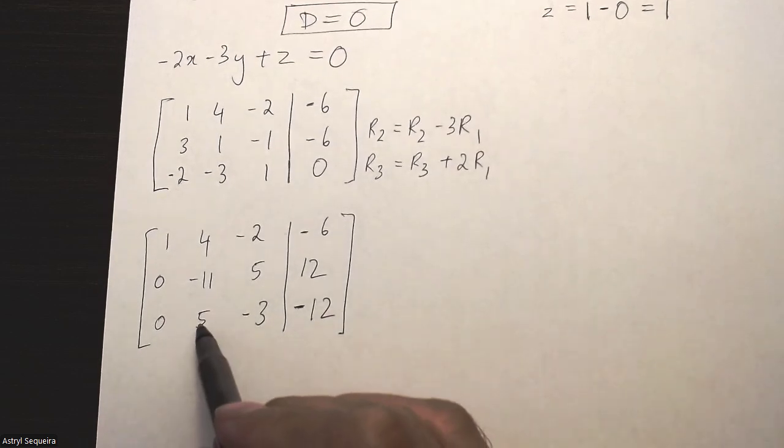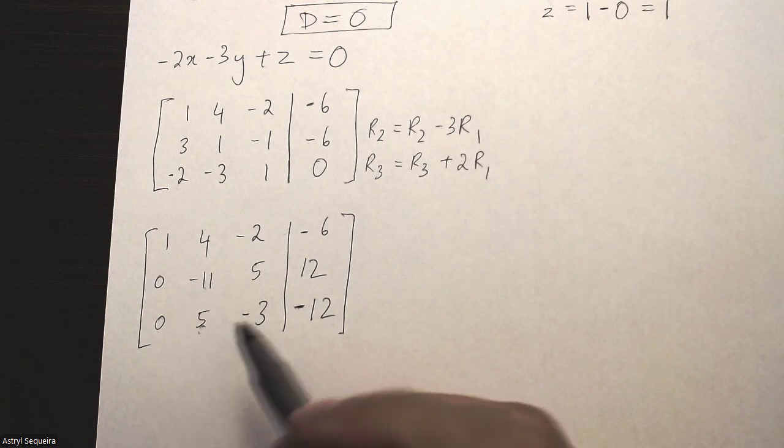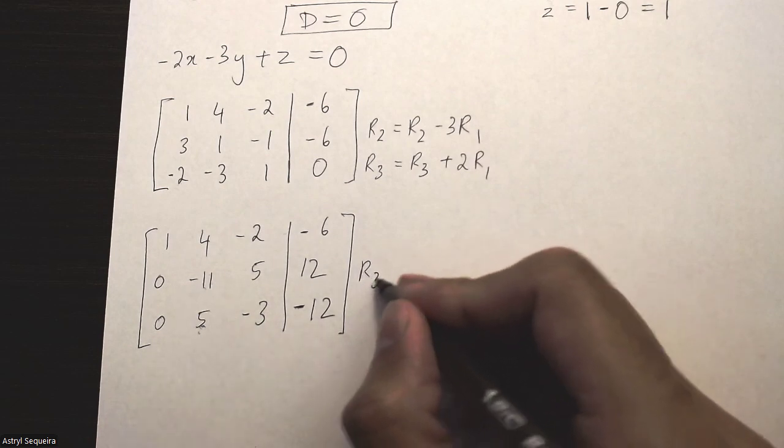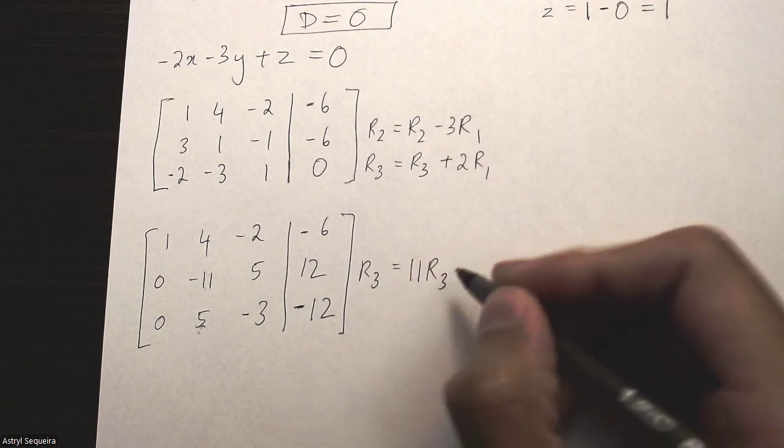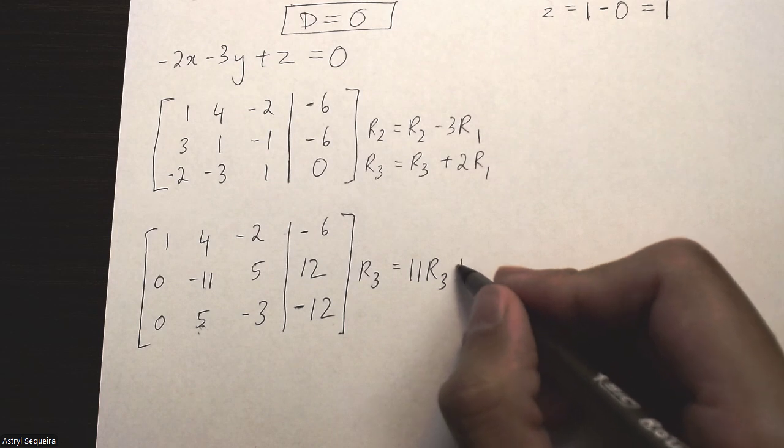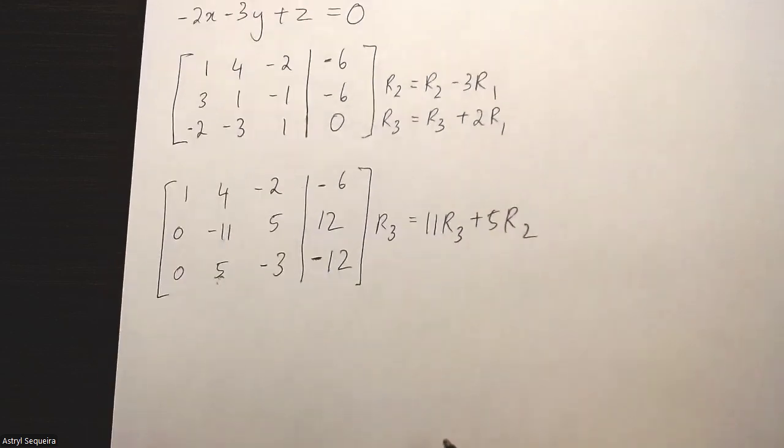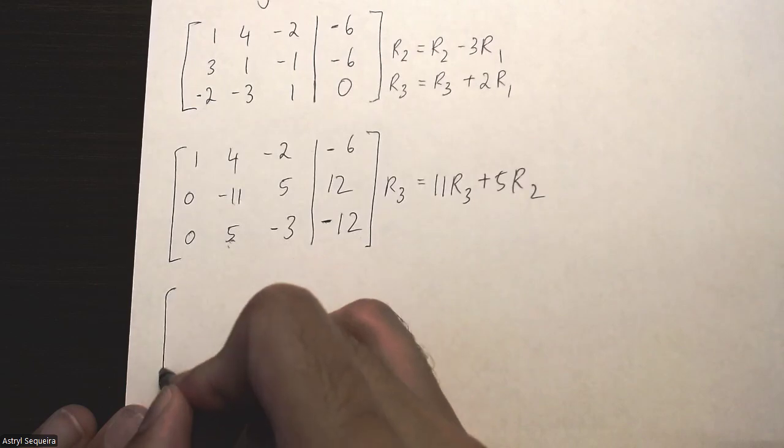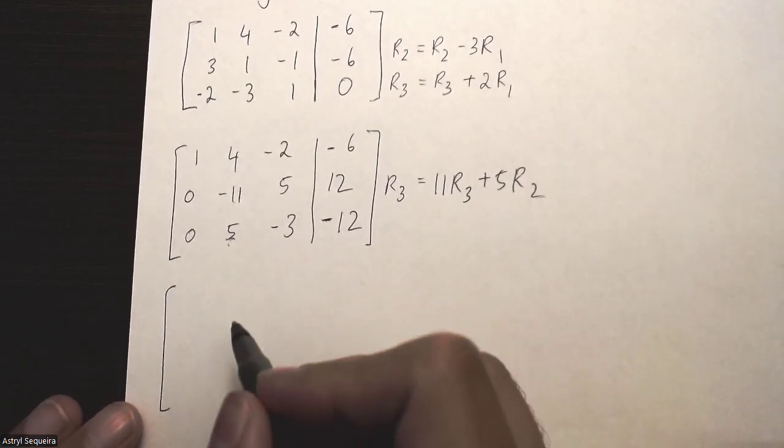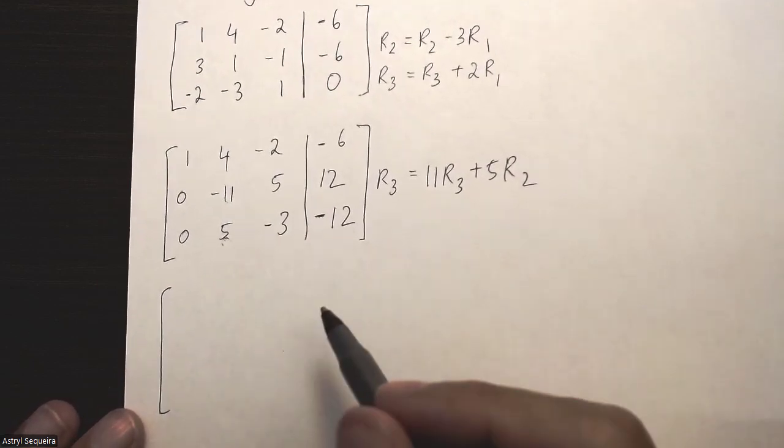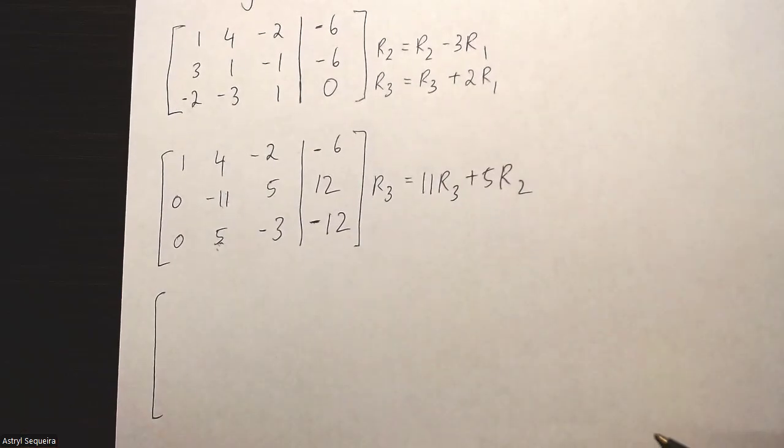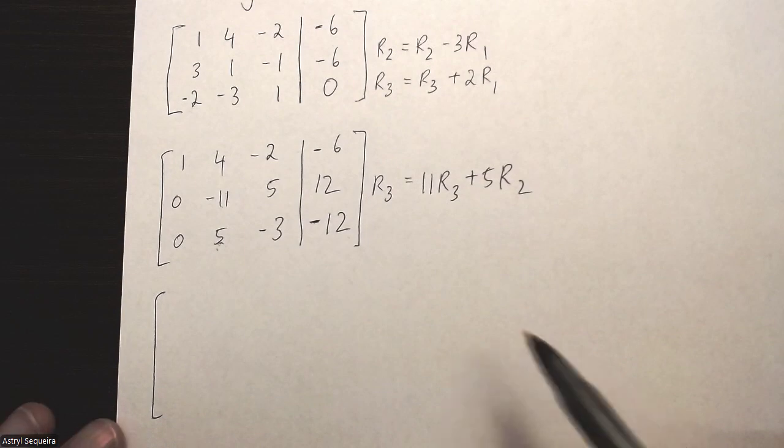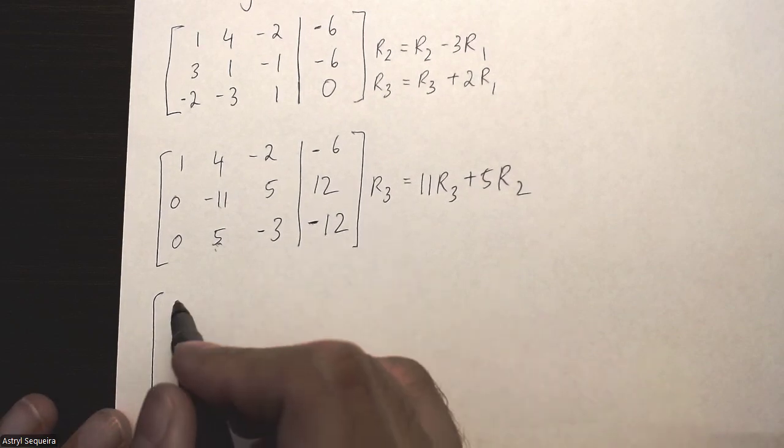Okay, next I want to eliminate this value over here. Unfortunately, 11 and 5 are not multiples of each other, so this is going to be a huge calculation. I'm going to do row 3 equals 11 times row 3 plus 5 times row 2. Again, I'm not really going to explain how to solve matrices in this video, because that's not what this video is specifically about. You should already know how to reduce a matrix and solve a matrix for this video right here.